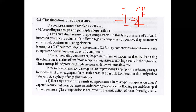For example, reciprocating compressors — generally this type of compressor is used in workshops. Then rotary compressors: lobe compressor, vane compressor, screw compressor, and scroll compressors are the examples. In the reciprocating compressor, the pressure of gas is raised by decreasing volume due to the action of one or more reciprocating pistons moving inside the cylinder. These are capable of producing high pressure with low flow rate. In the lobe compressor or blower, gas is compressed by trapping it in a reducing passage formed by a set of engaging surfaces, and the gas is pushed from the suction side to the delivery side.